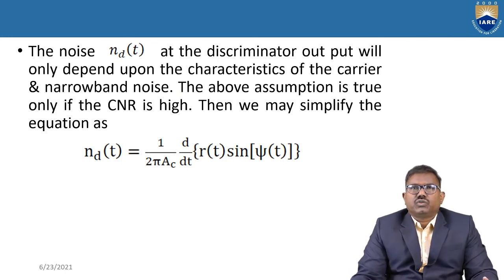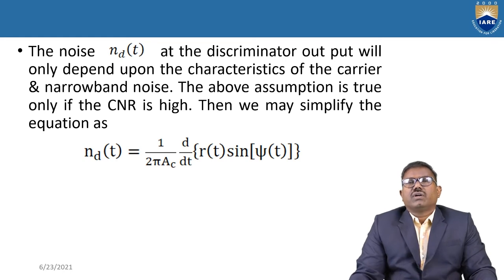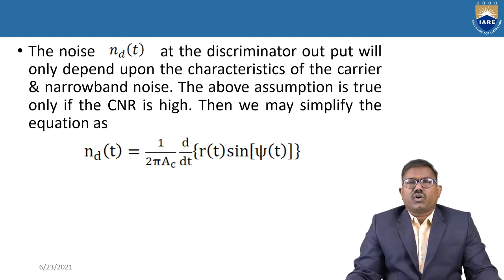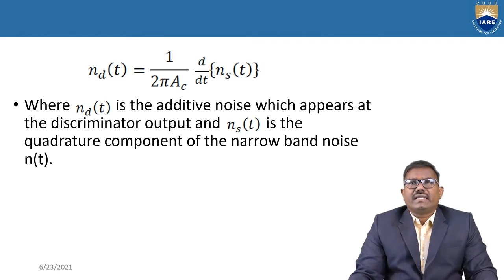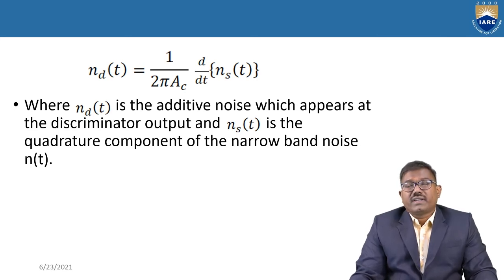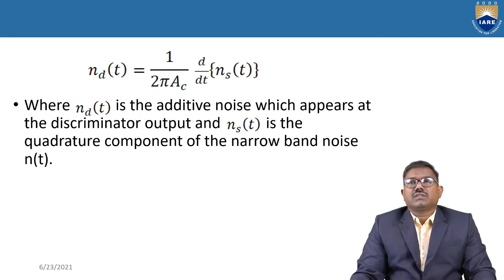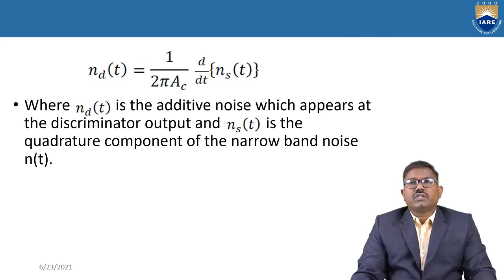The discriminator output noise nd(t) depends only on the characteristics of the carrier and narrowband noise. Simplifying, nd(t) = (1/2π·AC)·(d/dt)[R(t)·sin(ψ(t))]. Finally, nd(t) can be expressed in terms of the quadrature component of the narrowband noise. Since N(t) contains in-phase and quadrature components, nd(t) is directly proportional to Ns(t), the quadrature component of the narrowband noise.